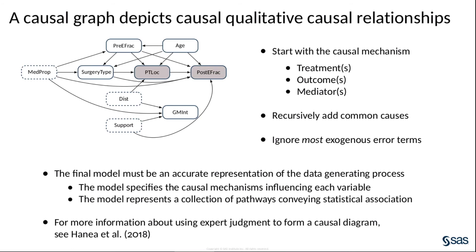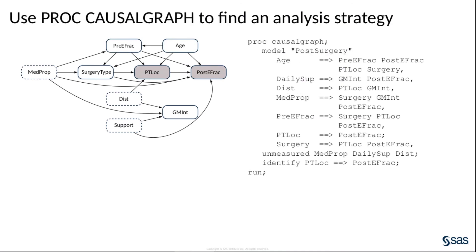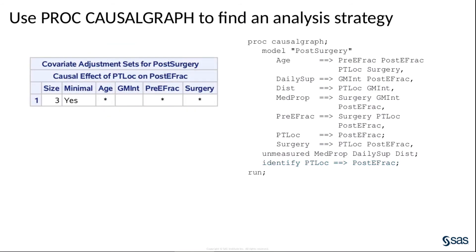Again, see the references at the end of this presentation for more details. Next, use the causal graph procedure to analyze your DAG. PROC Causal Graph contains a very flexible grammar for model specification. You use this grammar to specify all the edges that appear in your diagram. You can use an unmeasured statement to specify those constructs that do not appear in the available data. Finally, you specify the treatment variable and the outcome variable in the identify statement.